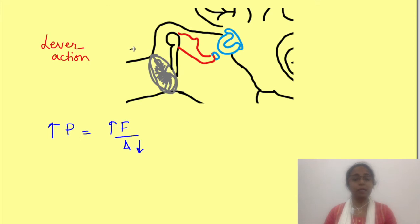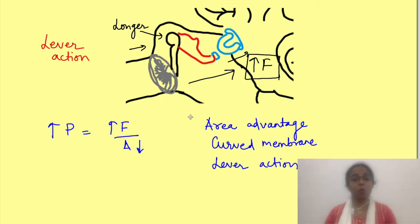And finally when tympanic membrane vibrates, it causes vibration of the ear ossicles as we have already discussed. But since malleus is longer than incus, it displaces incus with a greater force. Remember again that displacement distance is lesser but force of displacement is increased just like curved membrane effect. So impedance matching occurs by three mechanisms and all these three mechanisms together increase the pressure output by 46 times.